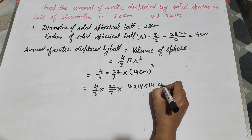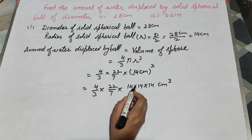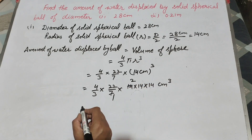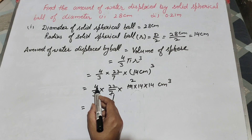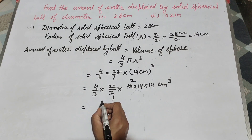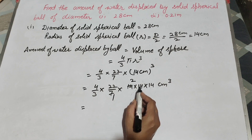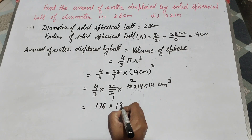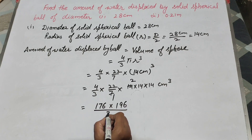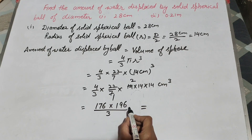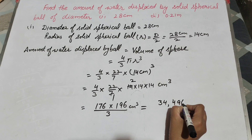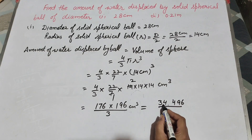So it is equal to 4 over 3 times 22 over 7 times 14 cubed, which we write as 14 × 14 × 14. The 7 and 14 cancel on the table of 7, giving 2. Now we multiply: 4 times 22 is 88, and 88 times 2 is 176. Also, 14 times 14 is 196, giving 176 times 196 over 3 cm³.